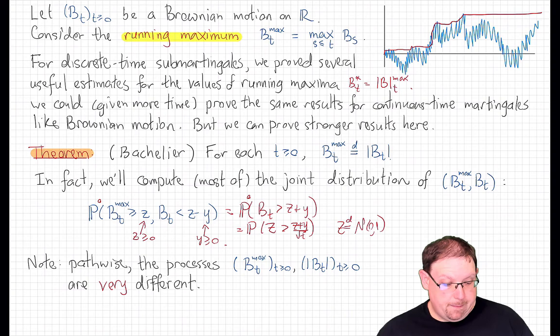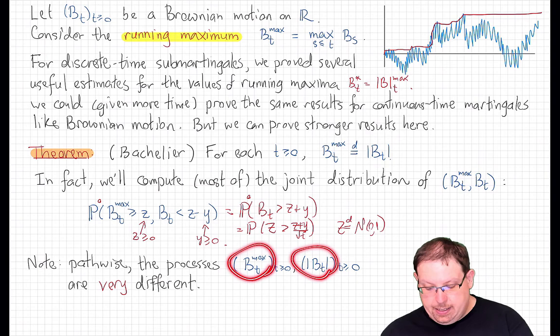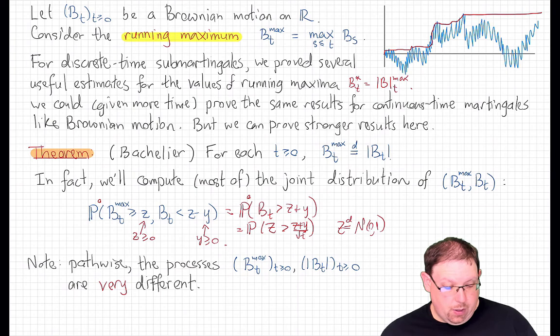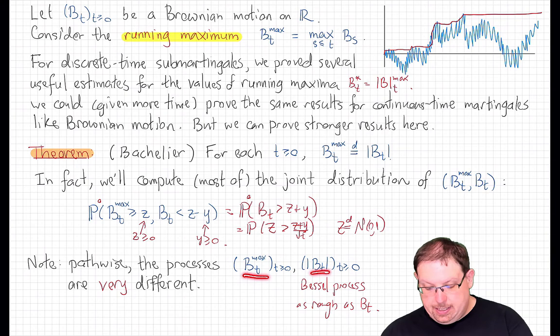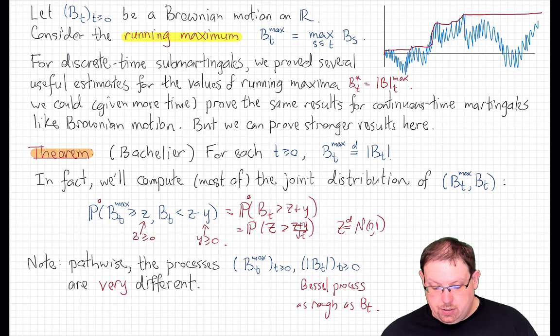Now, before we delve in, let me emphasize that as processes these are radically different. The running maximum is non-decreasing and therefore differentiable almost everywhere. The absolute value of Brownian motion is an example of something called a Bessel process, and it is at least as rough as Brownian motion. So while their distributions at a fixed time t are equal, their joint distributions are of course not the same.